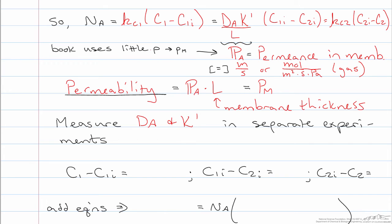Having equated all of these fluxes, we can now remove the intermediate unknown concentrations, just like is done in physics sometimes for resistance in series models. So we can say C1 minus C1I is equal to the flux divided by KC1. C1I minus C2I is the flux divided by the permeance, and C2I minus C2 is the flux divided by KC2.